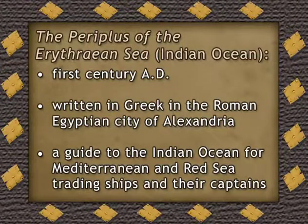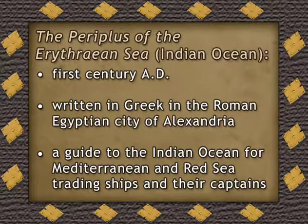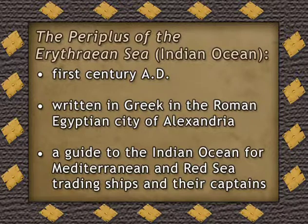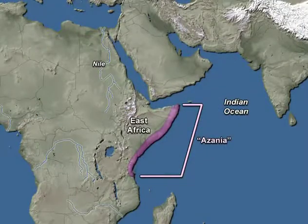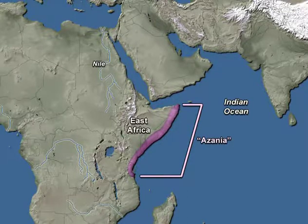A remarkable document from the first century AD, written in Greek in the Roman Egyptian city of Alexandria, called the Periplus of the Erythraean Sea — which was the name for the Indian Ocean — is essentially a guide to the Indian Ocean for Mediterranean and Red Sea trading ships and their captains. It shows quite clearly that by that point, some 2,000 years ago, what the Greeks called Azania, that is the East African coast, was already connected commercially with areas to the north.